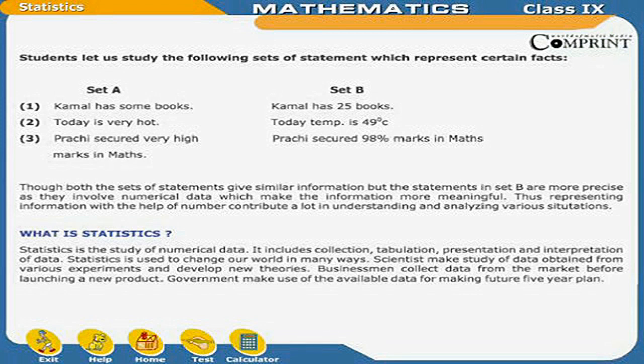Kamal has 25 books. Today temperature is 49 degrees Celsius. Prachi secured 98% marks in maths. Though both sets of statements give similar information, the statements in Set B are more precise as they involve numerical data which makes the information more meaningful.